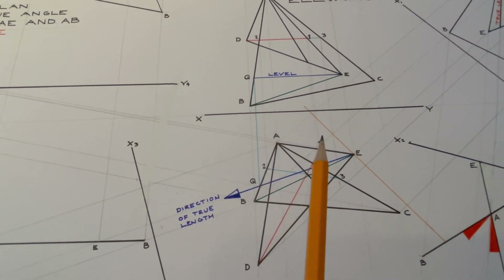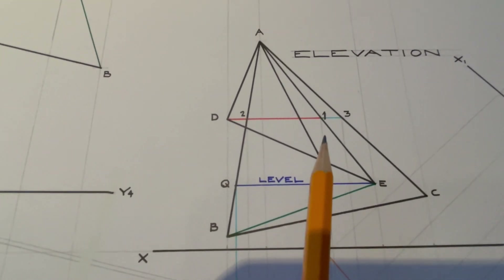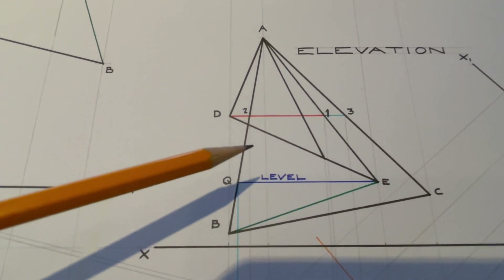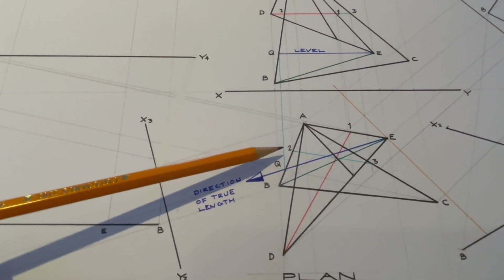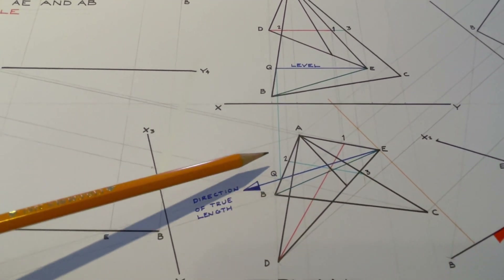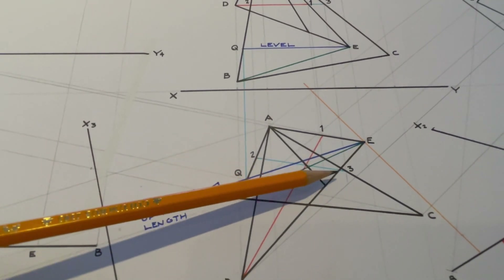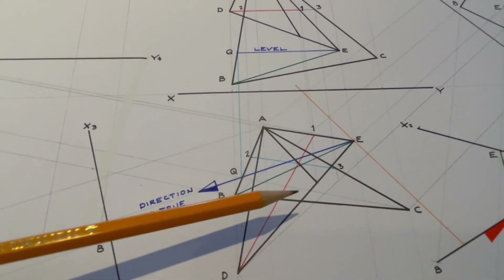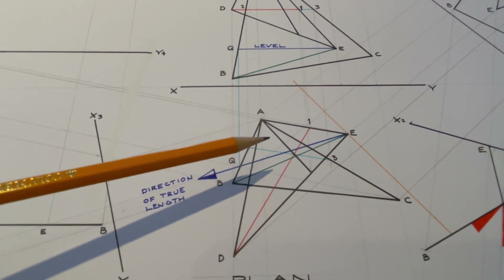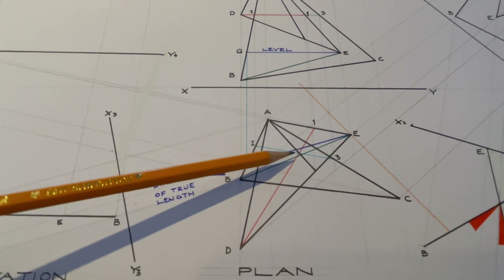We bring point 1 down onto AE in plan and join it back to D. That red line in plan is the horizontal line from the elevation beginning at D and finishing at point 1. On the same level, there is a line going from point 3 on AC to point 2 on AB. We bring point 2 down to AB in plan and point 3 down to AC in plan and draw the line. Where those two horizontal lines cross, we have a line running across plane ABC and a line running across plane ADE, so where those two lines cross is a point common to both planes.